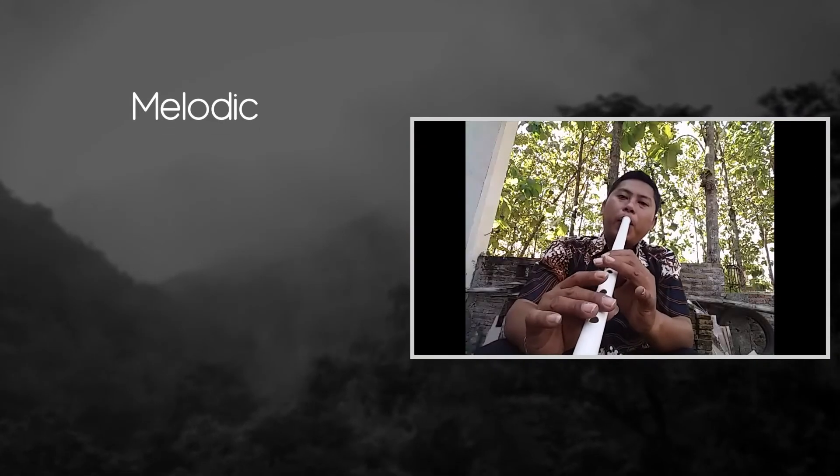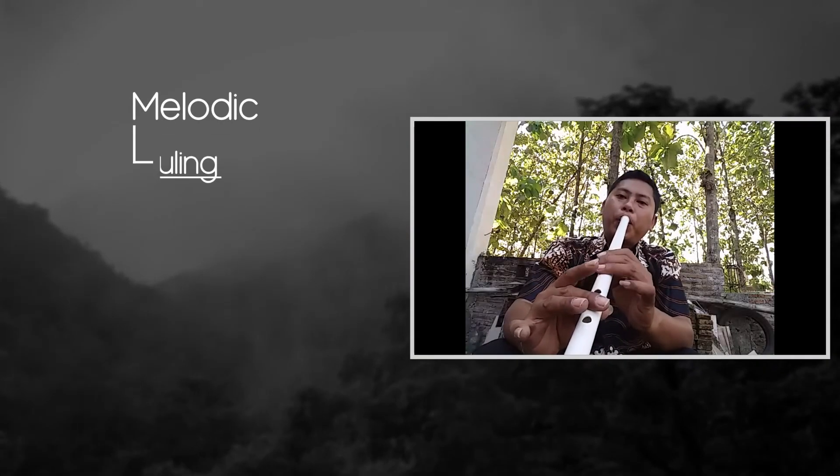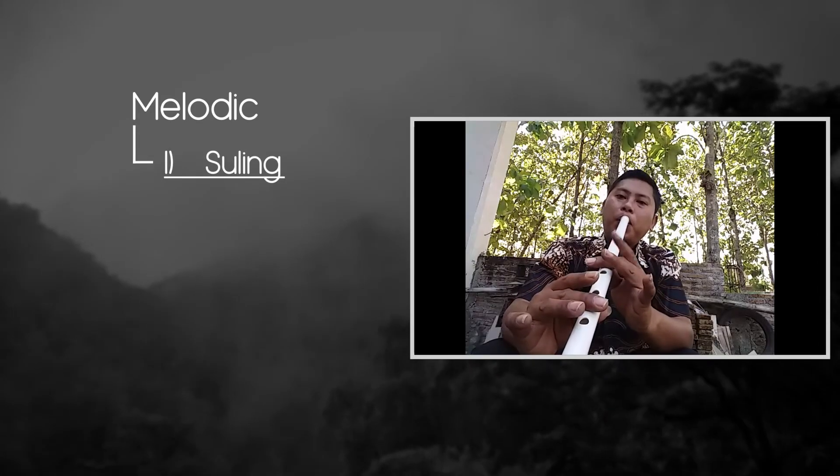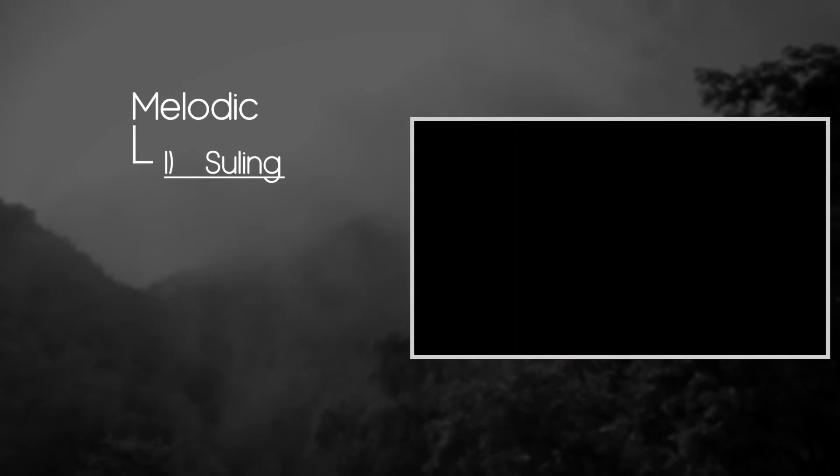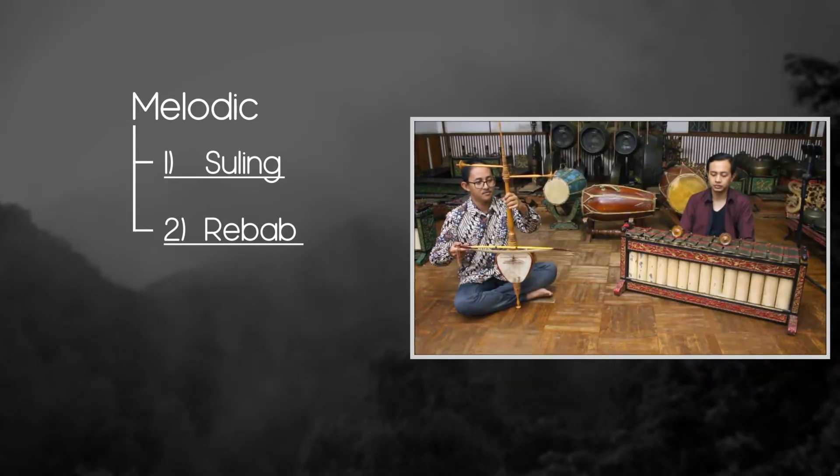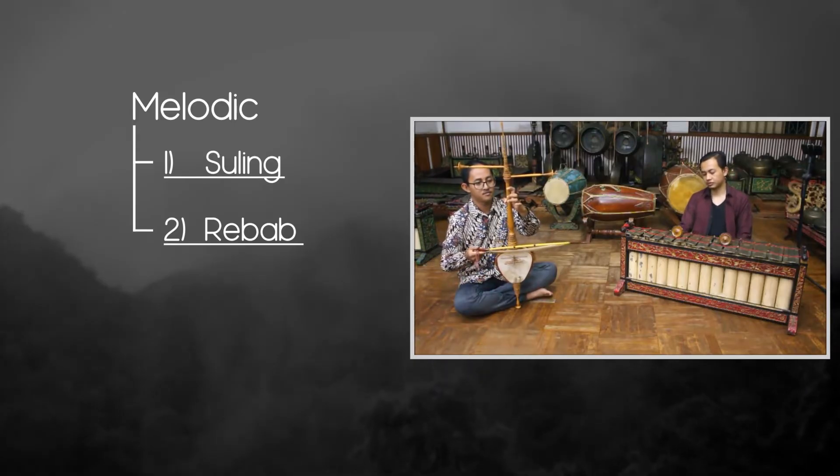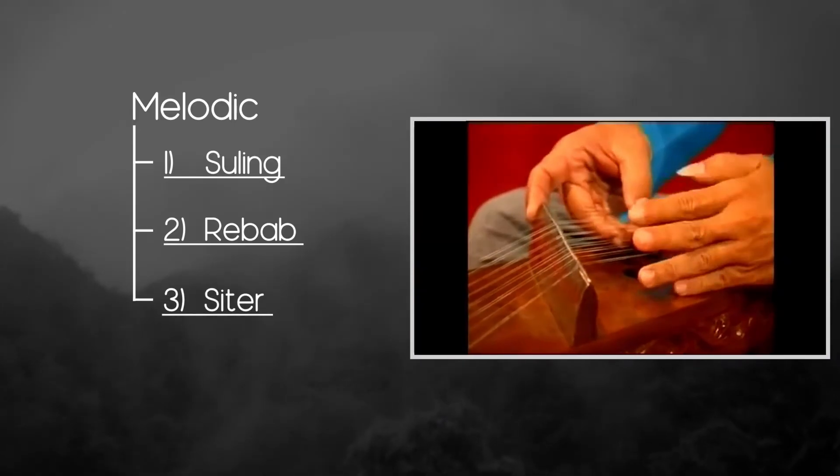And the last group of instruments plays melodic role. It is Suling, the flute-like instrument. Rebab, bowed two-string instrument. And Siter, a harp-like instrument.